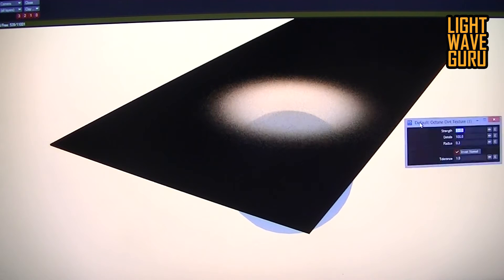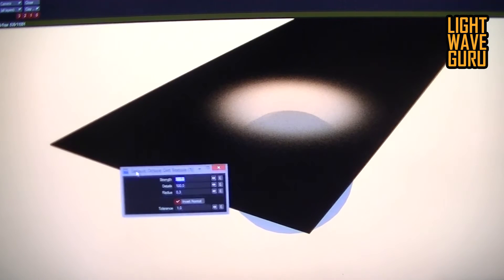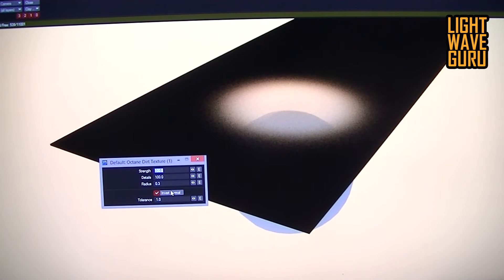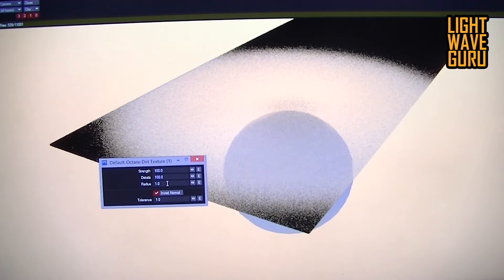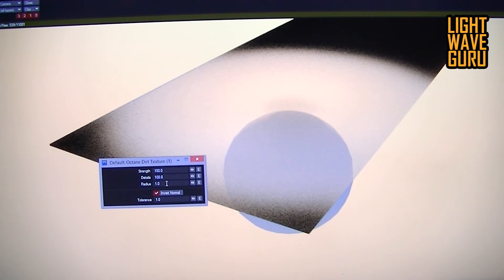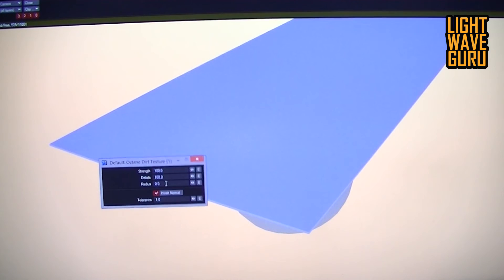If I open the Dirt node here and play now with the parameter, you can do with the radius here the following: If I go with the radius to one, you see the radius gets greater, or make the radius to zero, this effect is off.